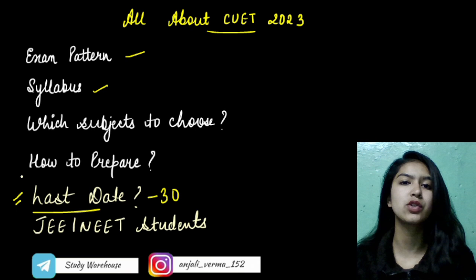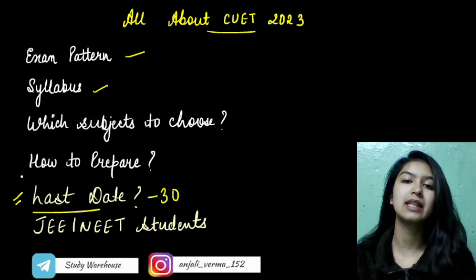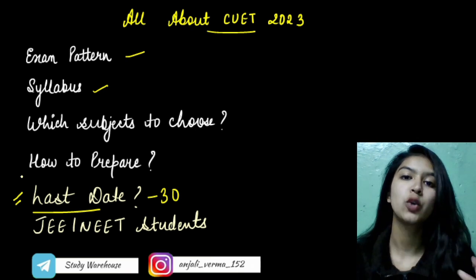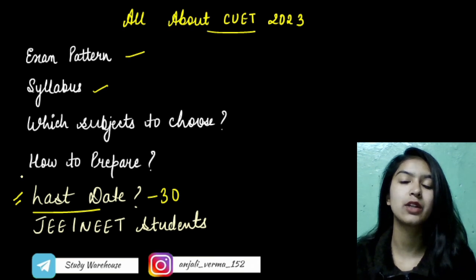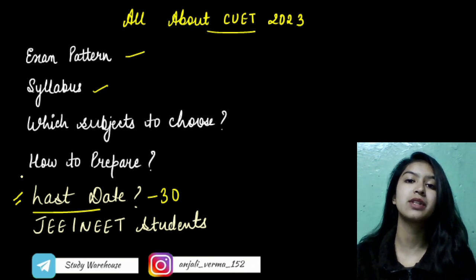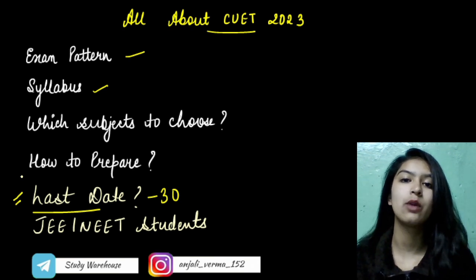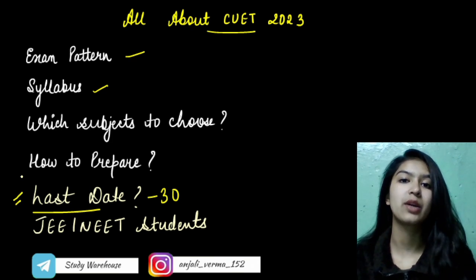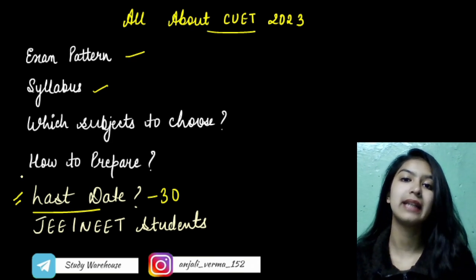There is a lot of confusion — students don't know what they need to fill out. So first, start collecting details about the university you are targeting. Find out which sections are compulsory there and what requirements are needed. Get everything in detail.